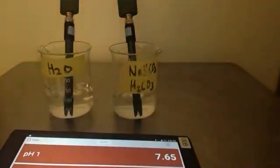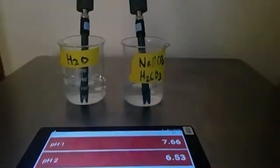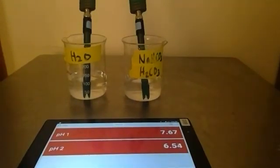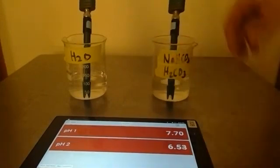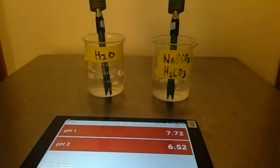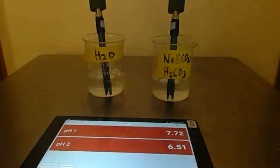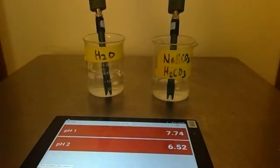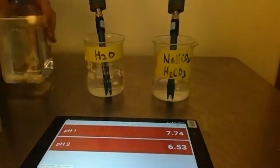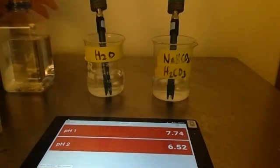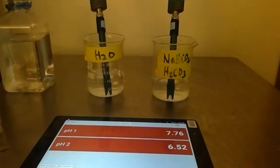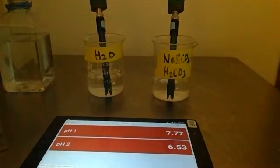We're going to test our buffer solutions and see the change in pH as we add a strong acid. We have our buffer here on the right, plain water on the left. pH sensor one is our buffer solution and pH sensor two is our water. I now have concentrated hydrochloric acid, close to about 1.5 to 2 molar.